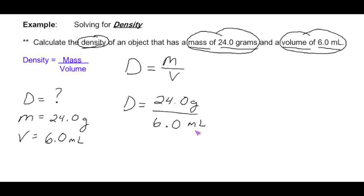24.0 grams divided by 6.0 milliliters gives us a final answer of 4.0 grams per milliliter for the density.